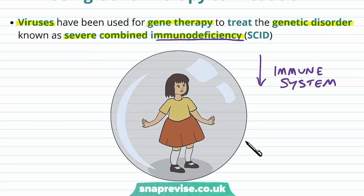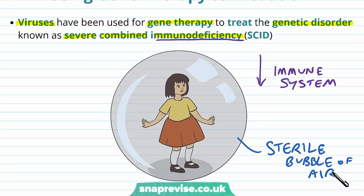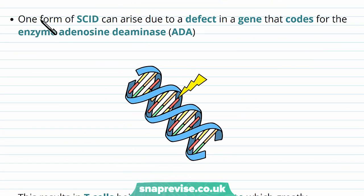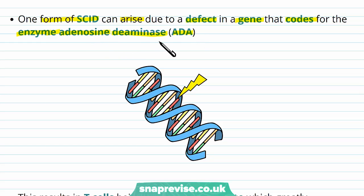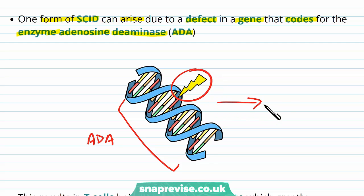Early on, people who had this disease had to live in a sterile bubble, because if they come into contact with any pathogens in the outside world, their immune system is not able to fight them off and they would die very early. There are different forms of this disease, but one form of SCID can arise due to a defect in a particular gene that codes for an enzyme called adenosine deaminase, or ADA. The mutation which affects ADA leads to this condition.